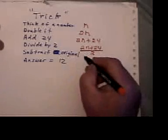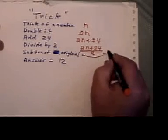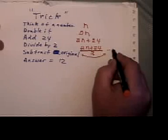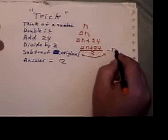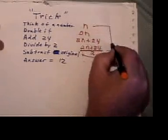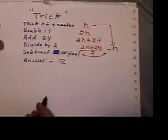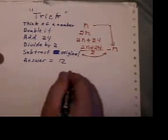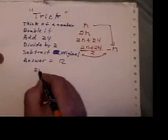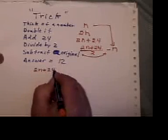And if you subtract your original number, subtracting your original number, which is n, that was your original number, let's see what you end up with. 2n plus 24, all over 2, minus n.